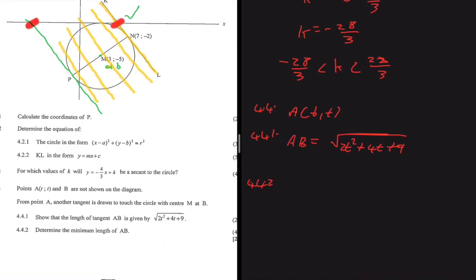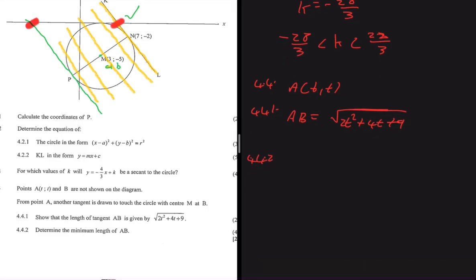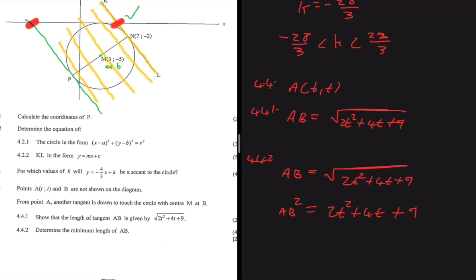This is similar to finding a minimum distance problem. We know AB equals the square root of 2T squared plus 4T plus 9. To avoid dealing with the square root, I'll square both sides: AB squared equals 2T squared plus 4T plus 9. Since we're looking for the minimum, I'll differentiate and equate to zero. This graph is concave up, so the turning point gives the minimum value.